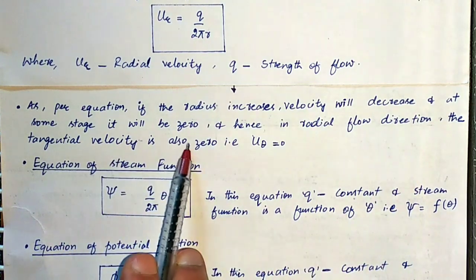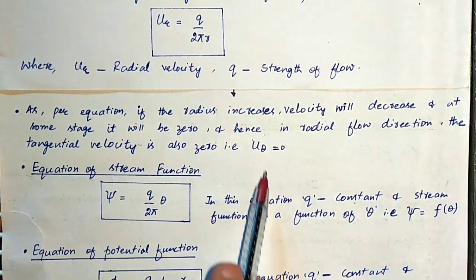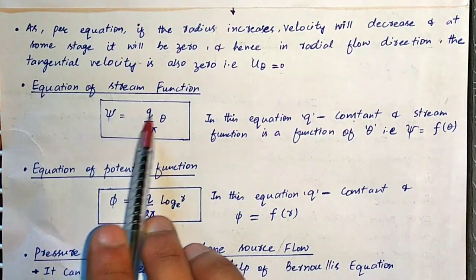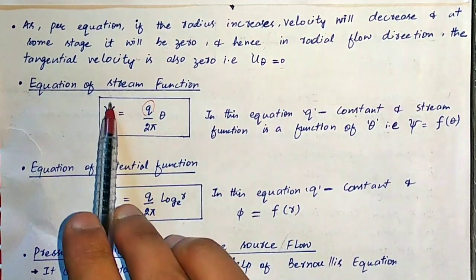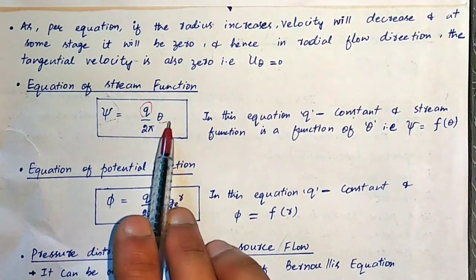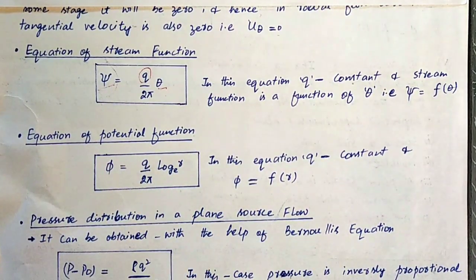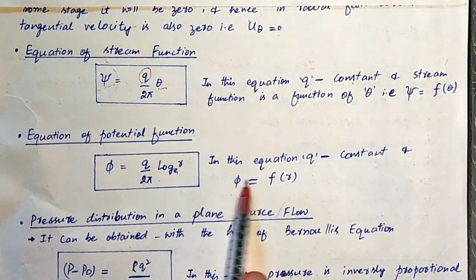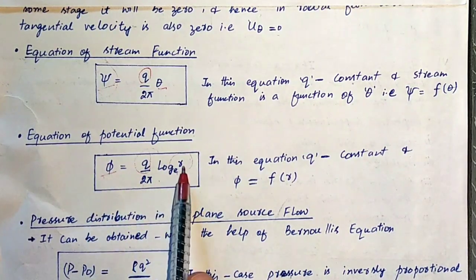In radial flow direction, the tangential velocity is also zero, so U_θ equals zero. If we have this case, the equation of stream function will be equal to Q upon 2π multiplied by theta. In this equation, Q is a constant and stream function is a function of theta. The equation of potential function is equal to Q upon 2π multiplied by log r (base e), where Q is constant and phi is a function of r.